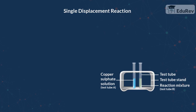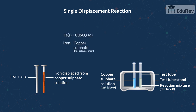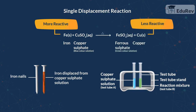The displaced copper deposits on the iron nail forming a reddish brown coating. We can infer from this experiment that iron seems to be more reactive and displaces copper from copper sulphate solution, thereby leading to the fading of the blue colour of the copper sulphate solution.